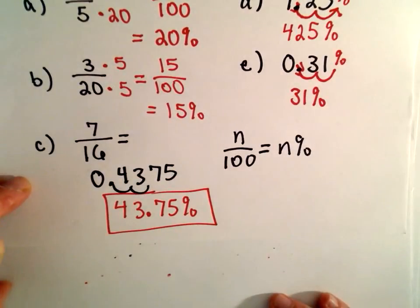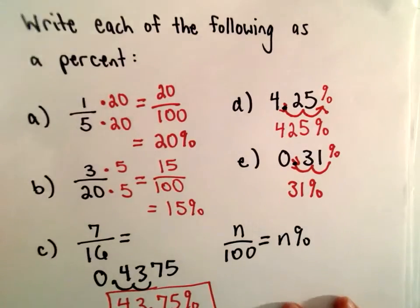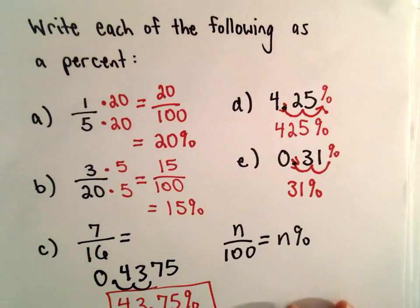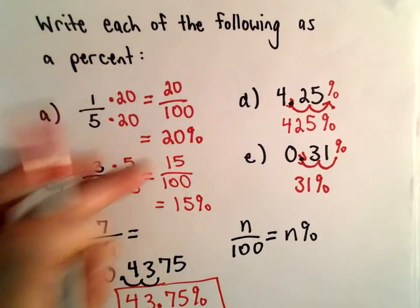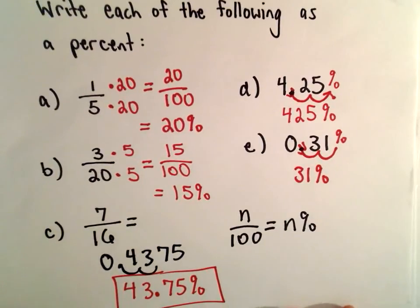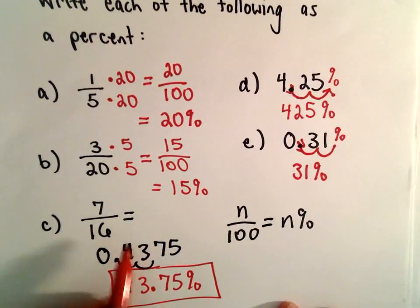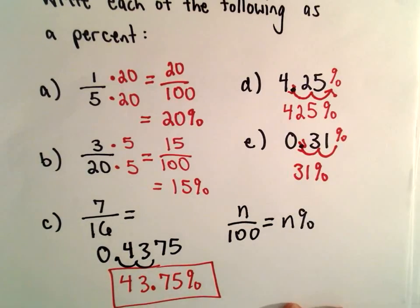So again, different strategies. If you have things as a decimal, it's easy, you just move it two places to the right. If you have a fraction and you can easily make the denominator into a 100, that's also a nice approach. Part C, I think, was probably the worst, just because we have to do the long division, and that's really, to me, the most tedious part of the problem.